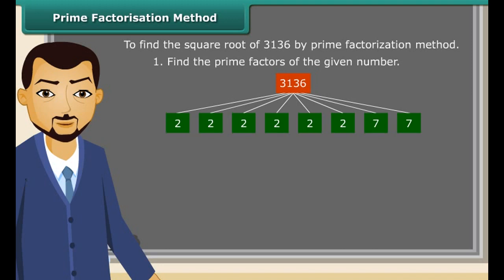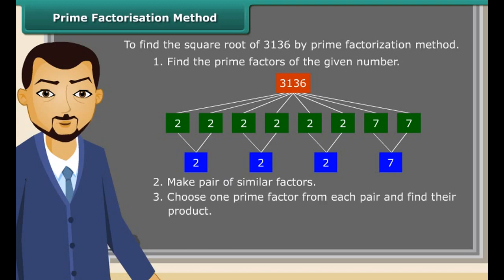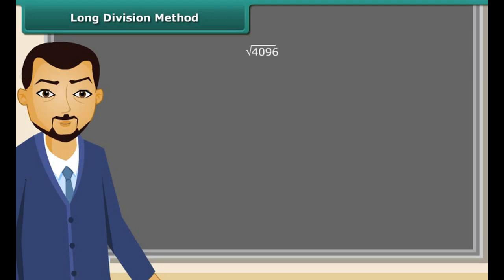Now, we will try to find the square root of a number by prime factorization method by following some steps. First of all, find the prime factors of the given number. Now, make pair of similar factors. After that, choose one prime factor from each pair and find their product. So, the product thus obtained is the square root of the given number.